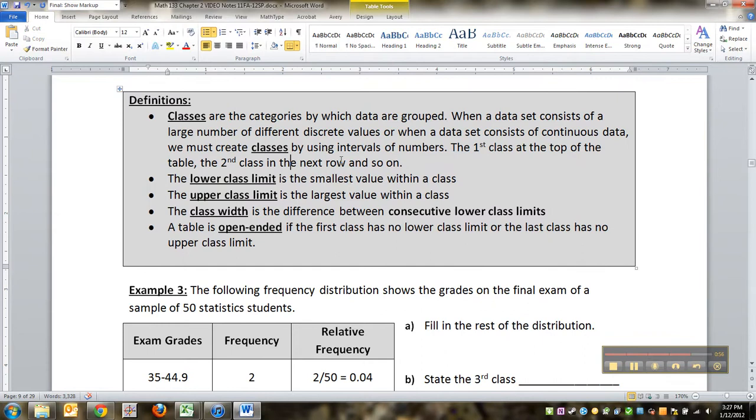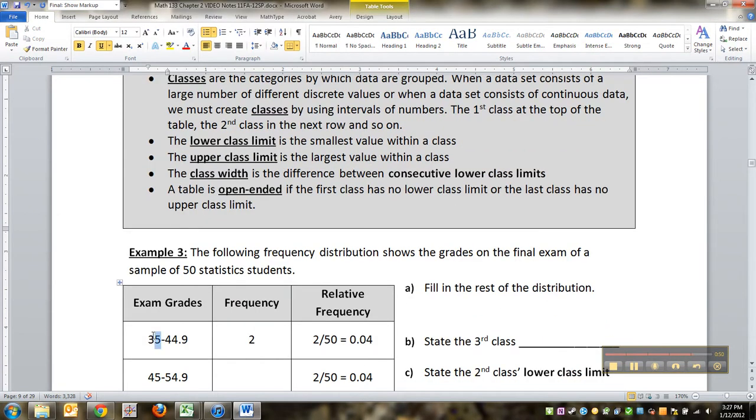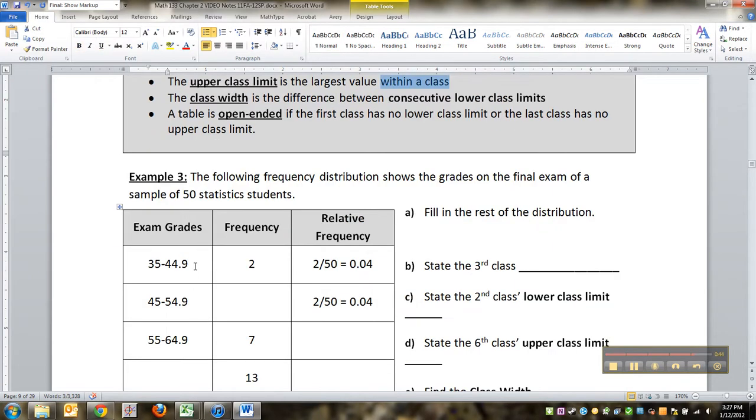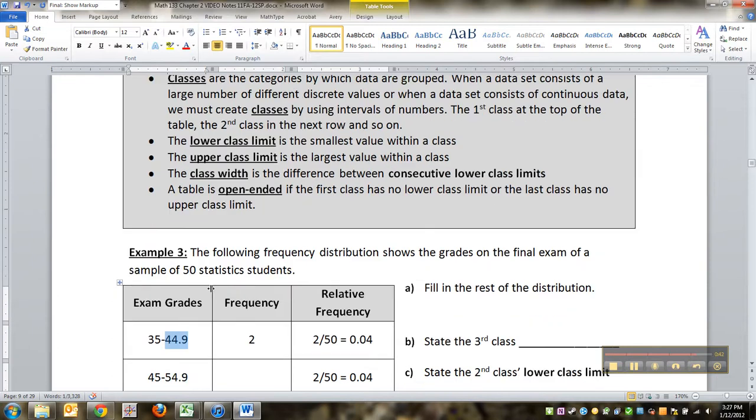The lower class limit is the smallest value within a class. So for example, the lower class limit right here is 35. The upper class limit is the largest value within a class. So for example, this one right here is 44.9. Technically, it's 44.9999999999 forever, but we just kind of round to whichever number is convenient.